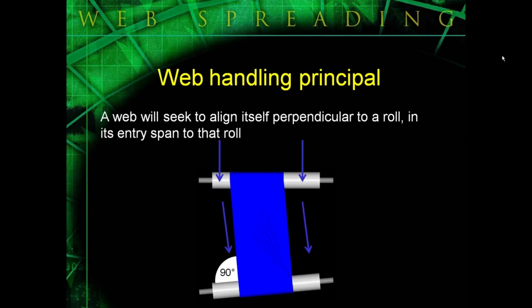This slide is obviously exaggerated, but anytime you have a roll that's parallel to the floor or in a parallel plane and the web comes off of that roll and enters a roll that's skewed to it, it will actually bend out of its normal running plane in order to maintain a 90 degree angle to the skewed idler or driven roll.